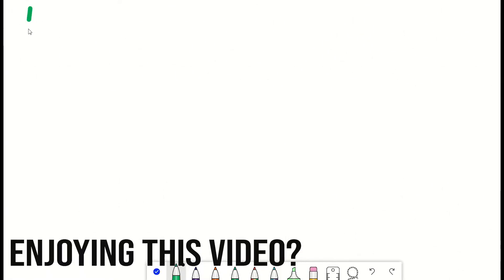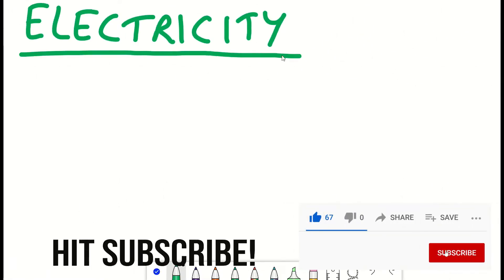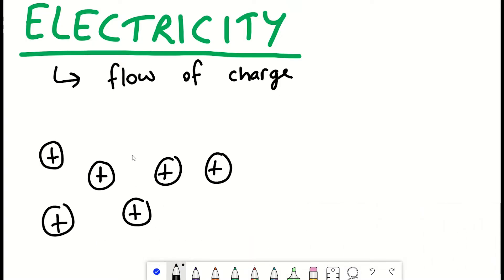Before we jump into the biology, just a tiny bit of physics. Electricity. By definition, electricity is a form of energy resulting from the existence of charged particles. Or even simpler, electricity is the flow of charge.